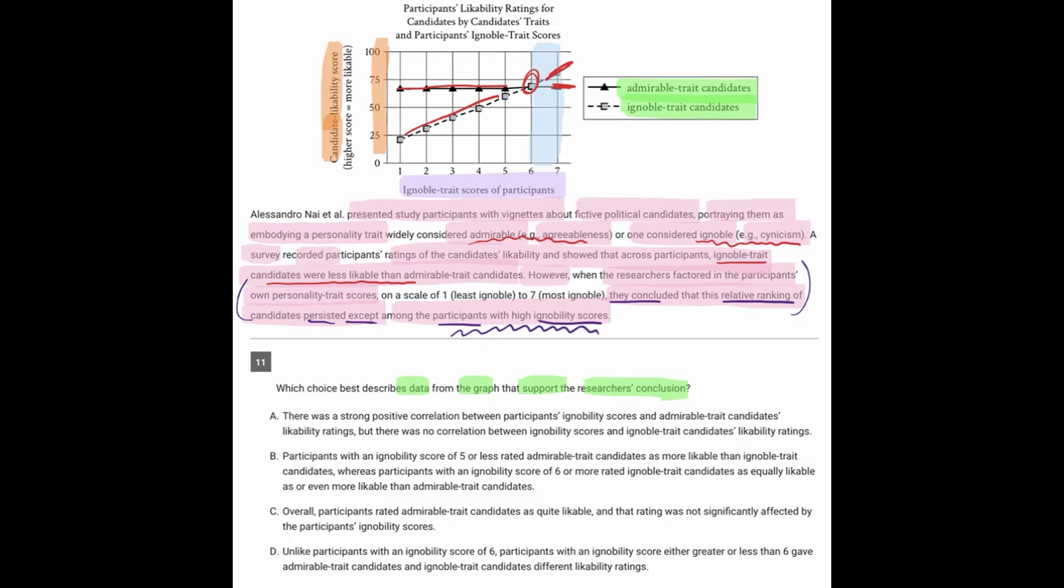And let's start looking through the answers to figure out which one matches. So A says there was a strong positive correlation between the participants' ignoability scores and the admirable trait candidates' likability ratings. Well, I'm not seeing that part already because the admirable candidates were this line right here and there was no correlation at all. That was just a flat graph all throughout. So I think based on that, we can already get rid of answer choice A here.